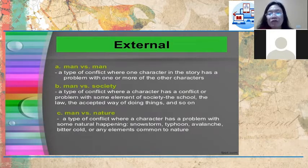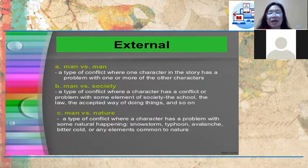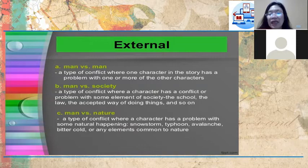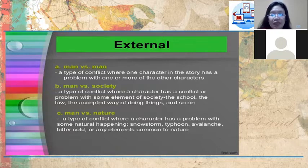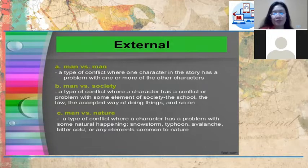For external conflict, we have man vs. man — where one character has a problem with one or more other characters, such as from protagonist to antagonist. Then man vs. society — where a character has a conflict with some element of society like the school, the law, or accepted ways of doing things. And man vs. nature — where a character has a problem with some natural happening, like a snowstorm, typhoon, avalanche, earthquake, COVID-19, or any element common to nature.